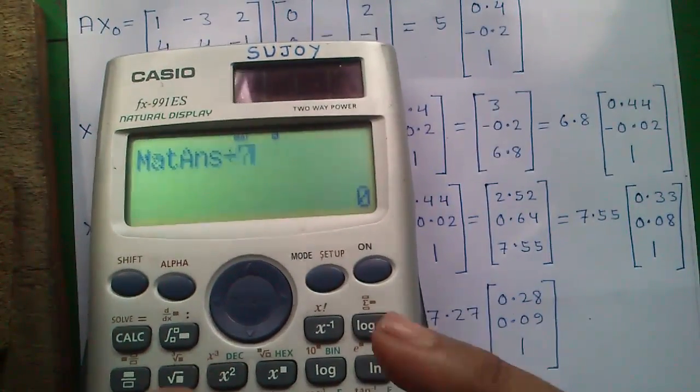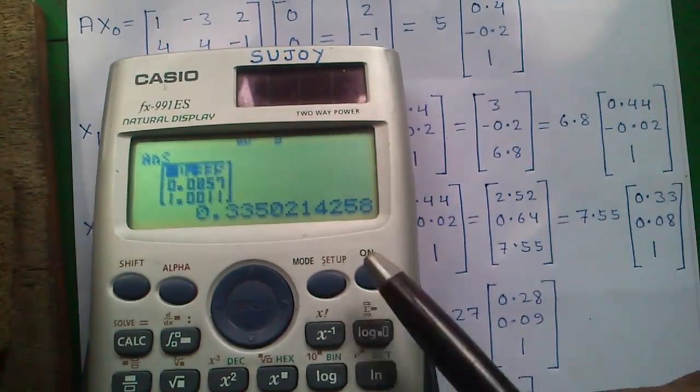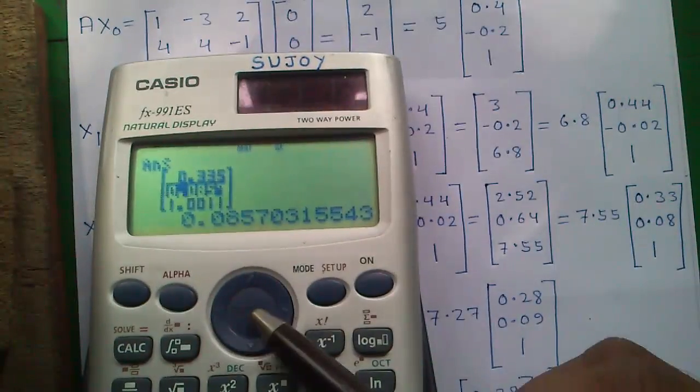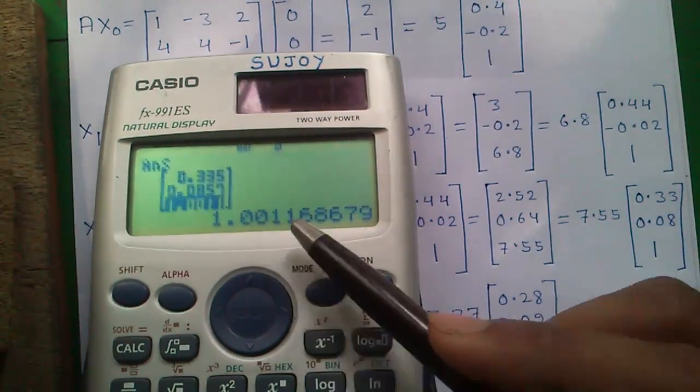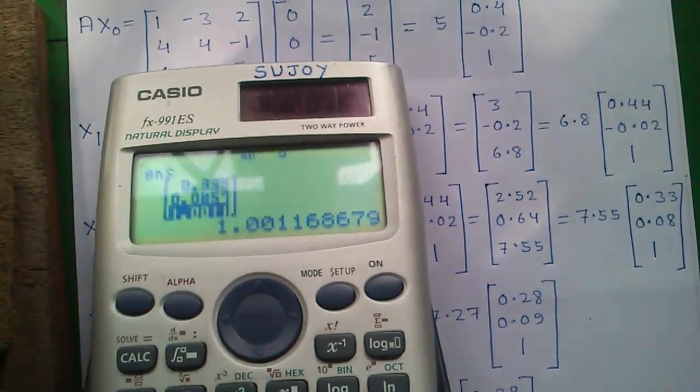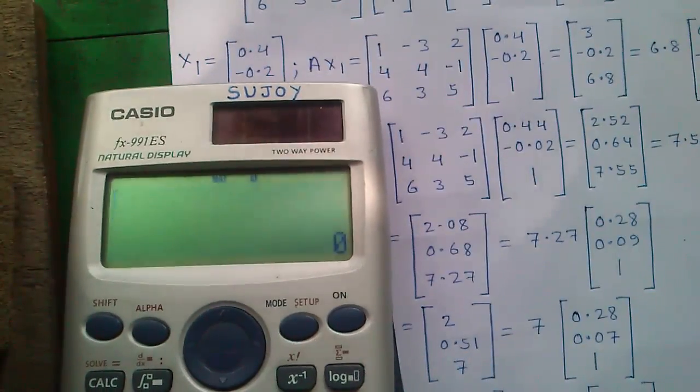Our answer is stored in matrix answer, so we will divide it by 7.55 and press equals. It will become 0.33, 0.08, and 1.00. This will become our x3 value. Isn't it very easy using our scientific calculator?